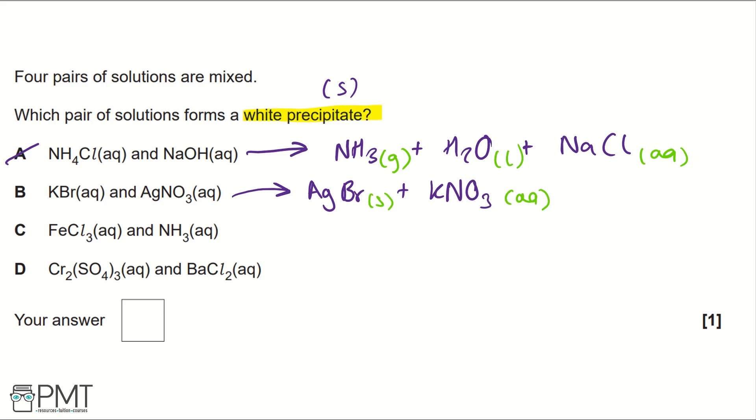but it's not white, because bromide ions are yellow, so silver bromide would be a yellow precipitate, meaning we can also eliminate B.